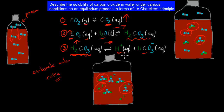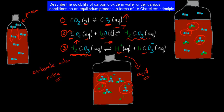This end product is acidic. Hydrogen ions make something acidic, which is why Coke, carbonated water, and soda water are all quite acidic. These are the three steps needed to make that happen.